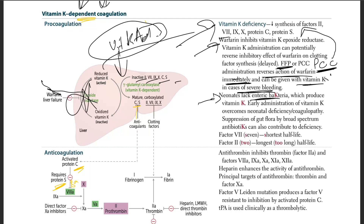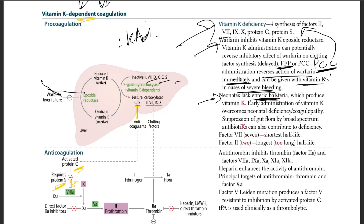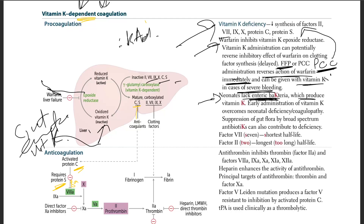Neonates lack enteric bacteria, which is important because that's how we get vitamin K — from gut enteric bacteria which produce vitamin K. That's why you give early administration of vitamin K to a newborn child to overcome neonatal deficiency and coagulopathies. Also, suppressing gut flora with broad-spectrum antibiotics can contribute to vitamin K deficiency.